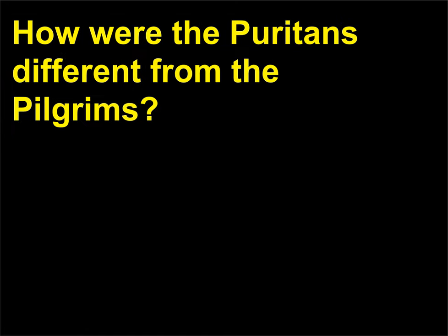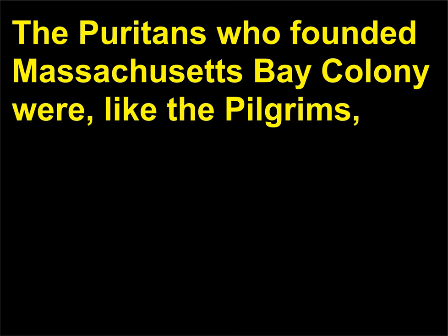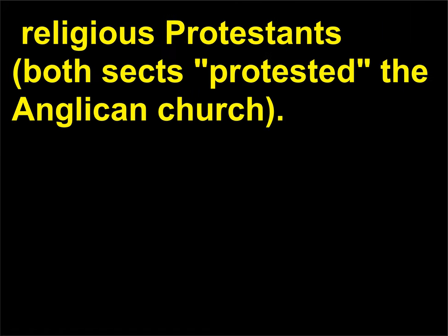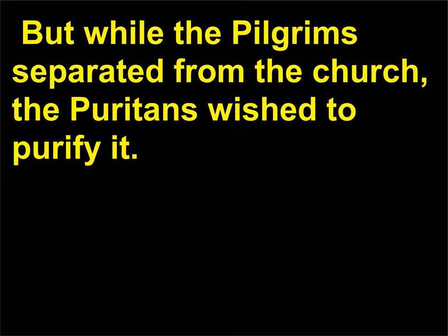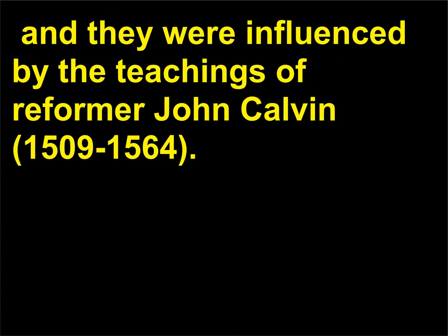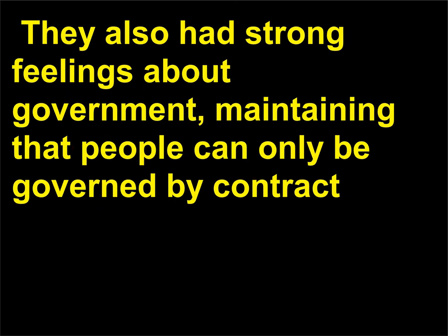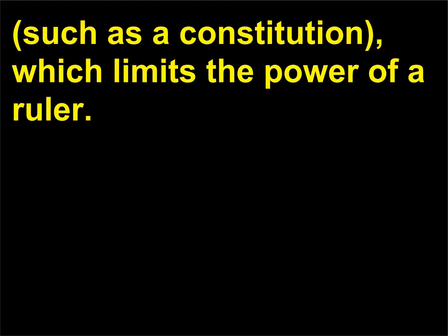How were the Puritans different from the Pilgrims? The Puritans who founded Massachusetts Bay Colony were, like the Pilgrims, religious Protestants; both sects protested the Anglican Church. But while the Pilgrims separated from the Church, the Puritans wished to purify it. Their religious movement began in England during the 1500s, and they were influenced by the teachings of Reformer John Calvin, 1509–1564. They also had strong feelings about government, maintaining that people can only be governed by contract, such as a constitution, which limits the power of a ruler.